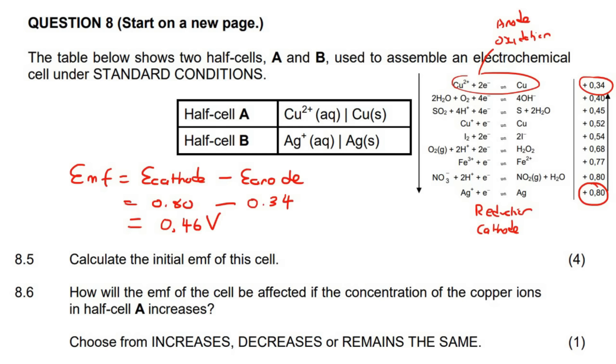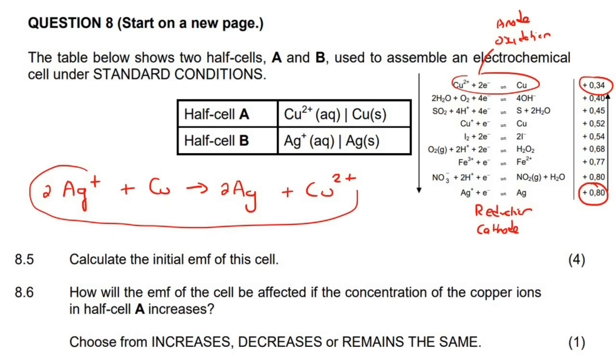For this next question, it says, how will the EMF of the cell be affected if the concentration of copper ions increases? So what we need for this is the previous question's answer, which was 2Ag plus plus copper gave us 2Ag plus copper 2 plus. So that was from our previous answer. Now, all that you do in a question like this is you use Le Chatelier's principle. Remember that this is the pure copper. That's pure copper. And this here is your copper ion. And ion is anything that has a charge.